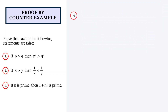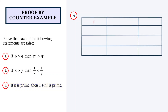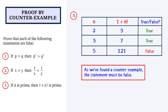Finally, let's look at the third example. If n is prime, then 1 plus n factorial is also prime. Let's create a table with columns n, 1 plus n factorial, and whether the statement is true or false. Let's pick the first prime number, which is 2. So 1 plus 2 factorial is equal to 3. As 3 is also a prime number, the statement is true. Now try the next prime, which is 3. So 1 plus 3 factorial is equal to 7, which is also prime, so the statement still appears to be true. Now try the next prime, which is 5. So 1 plus 5 factorial is equal to 121. But 121 is not a prime number because it's divisible by 11. So this is false, and as we found a counterexample, the statement must be false.